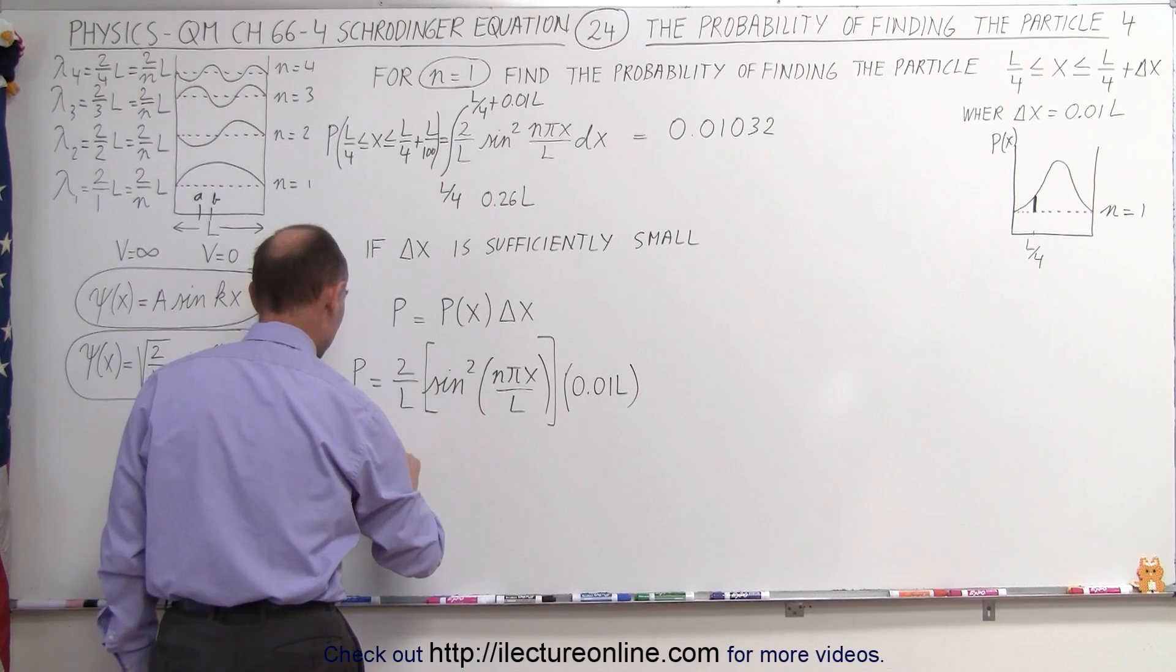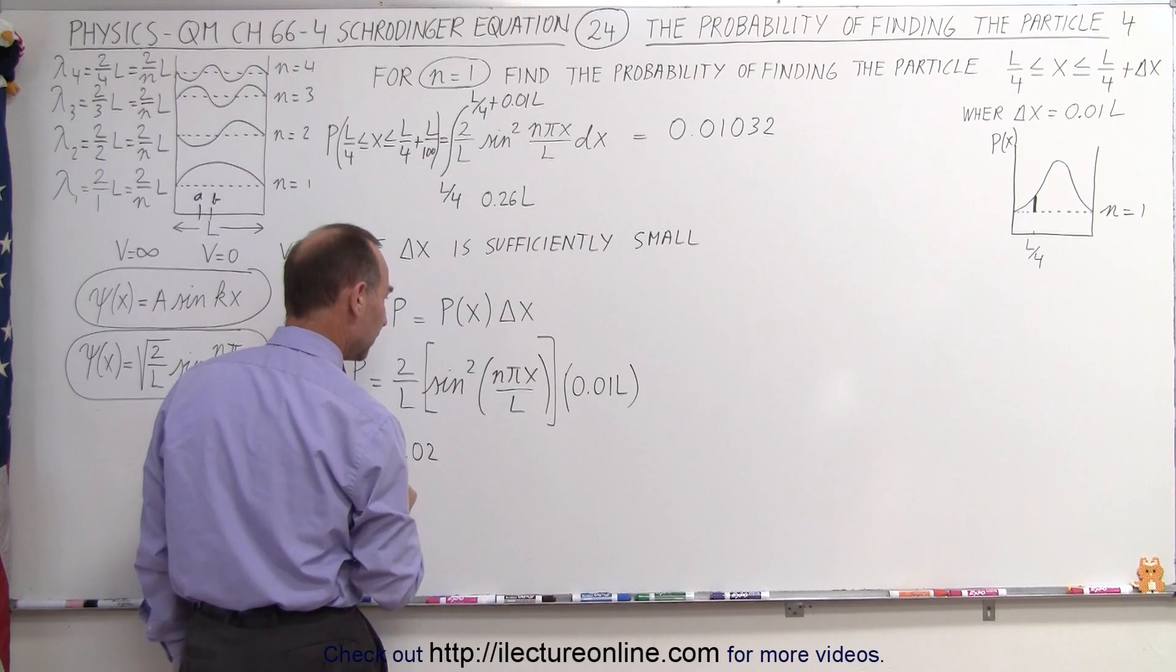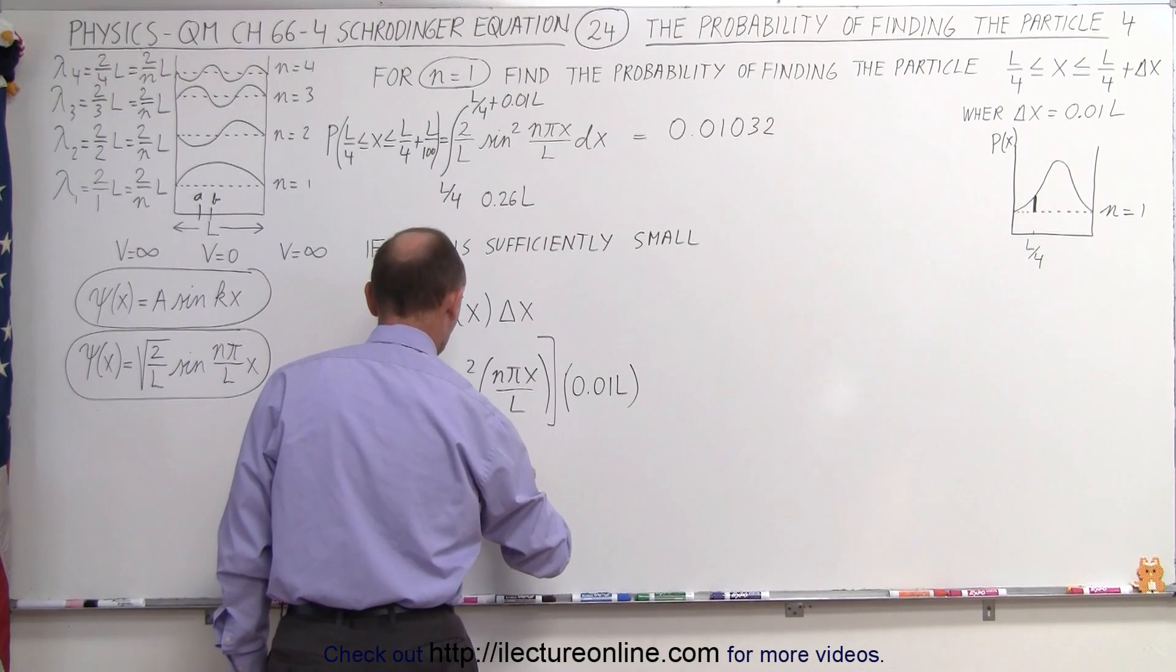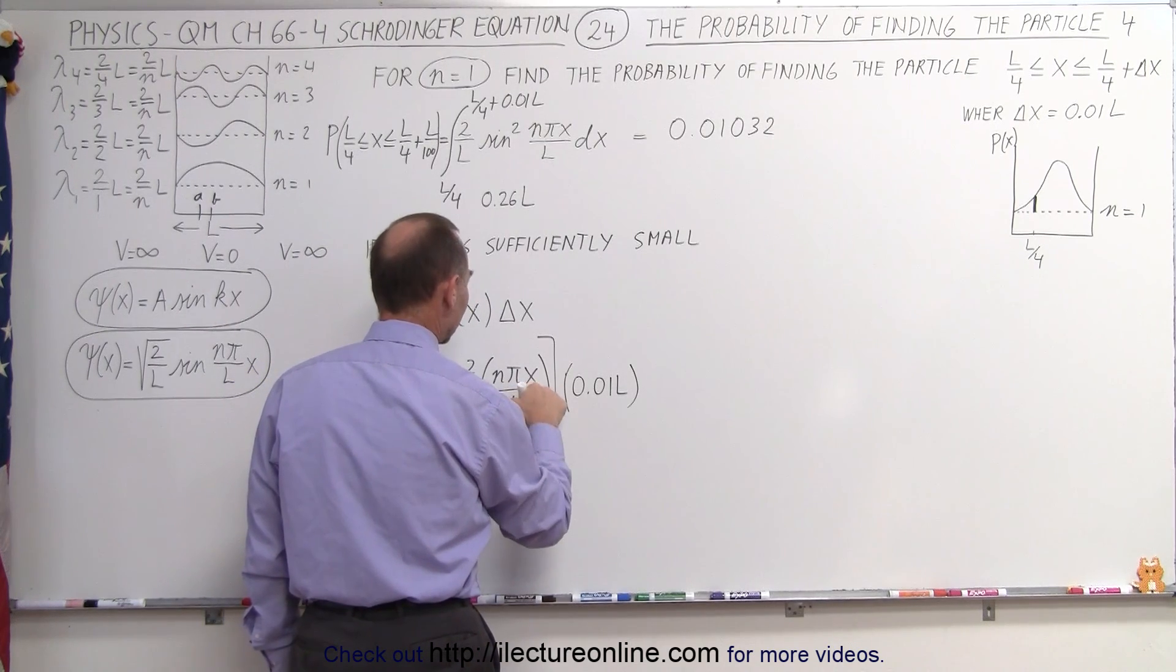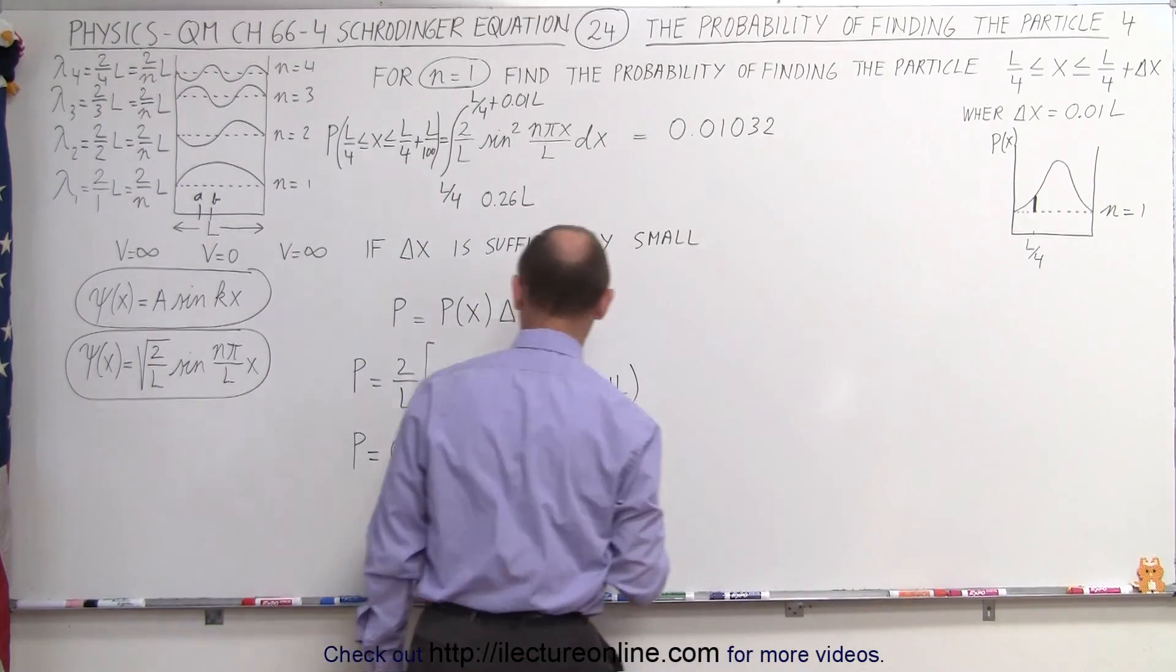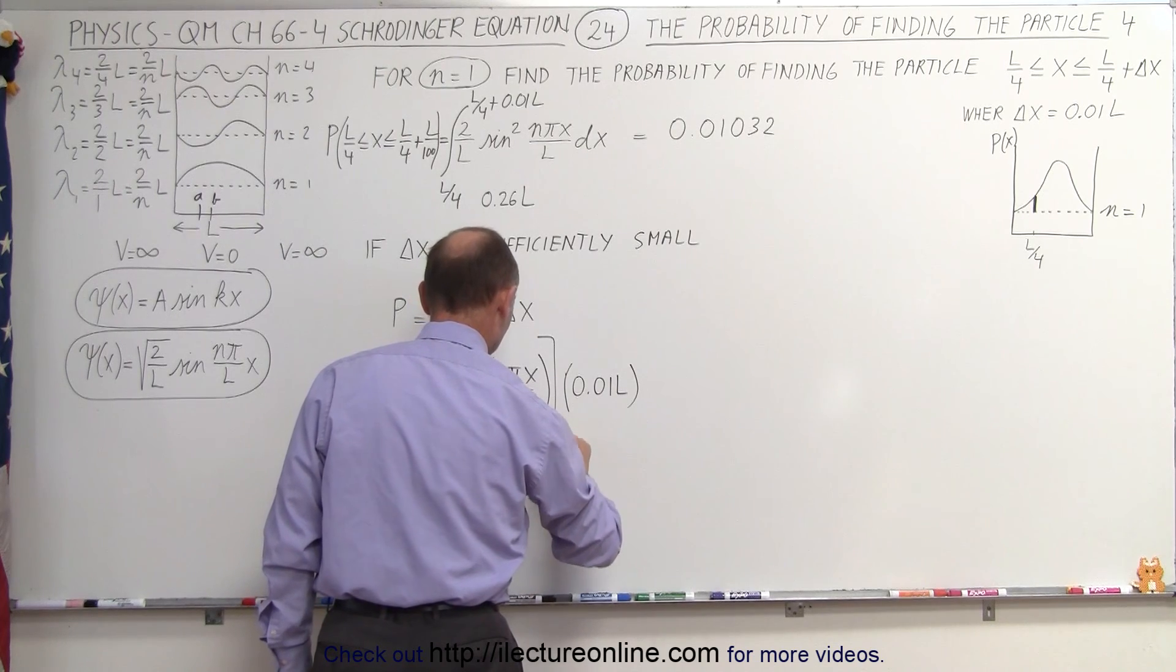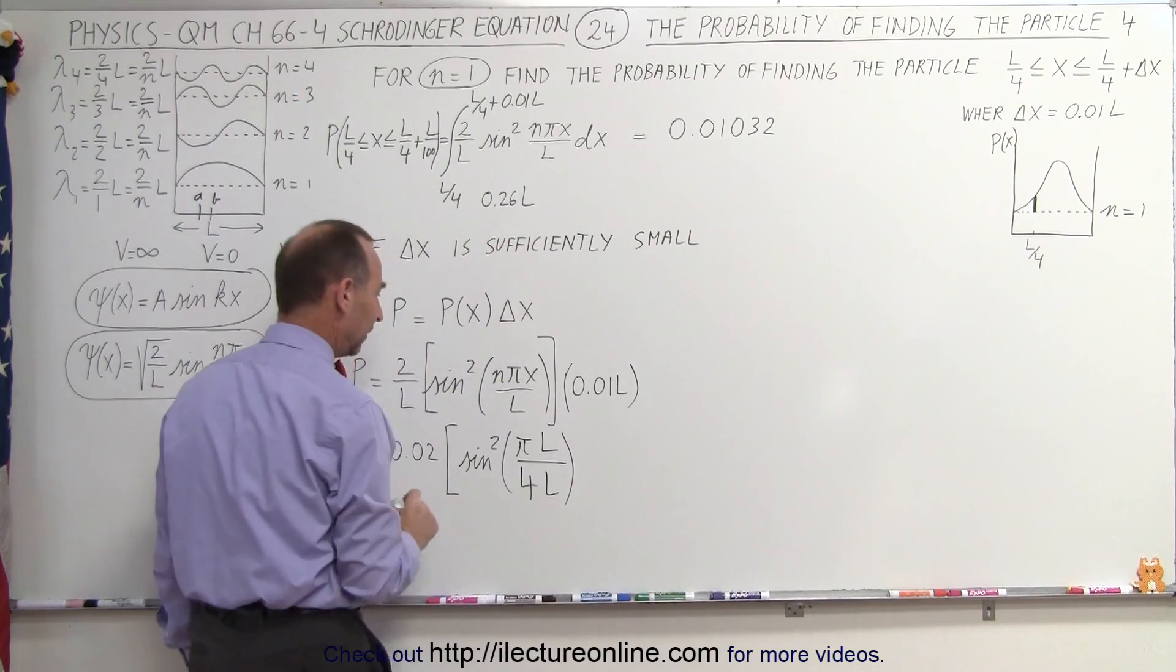We get the following. We get P is equal to 0.02, because the L's cancel out, times the sine squared of n is going to be 1. And x has to be the location where we're interested in, which is going to be L over 4. So n is 1. We have pi times L over 4 times L. So the angle now becomes that.